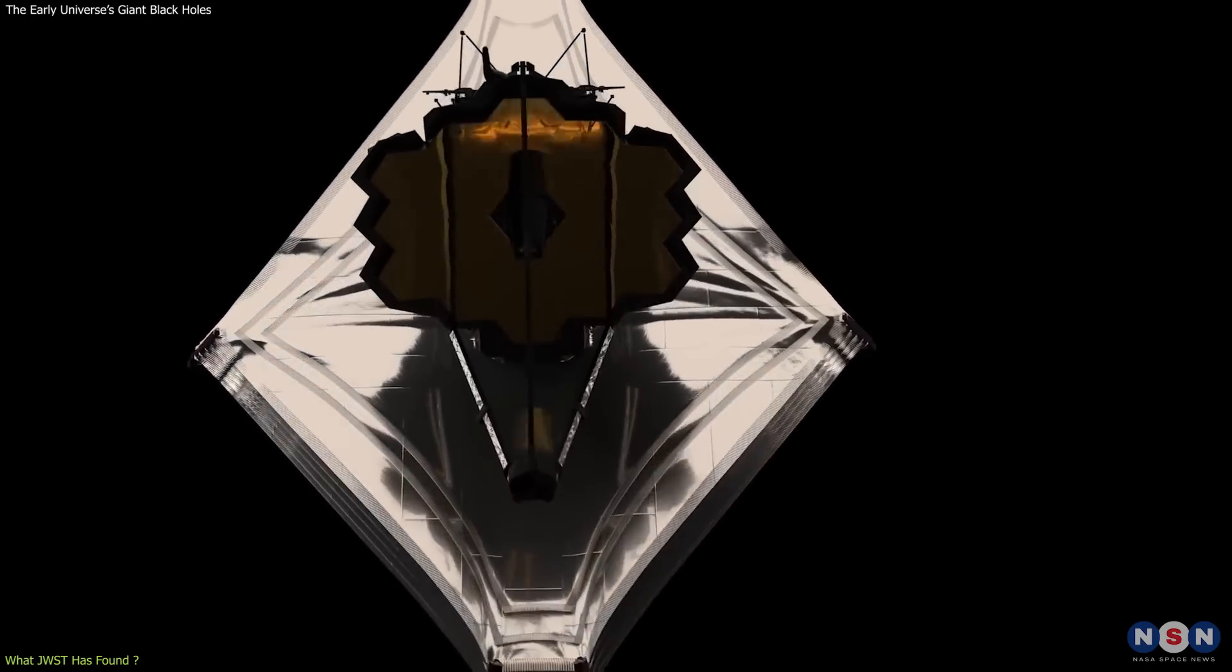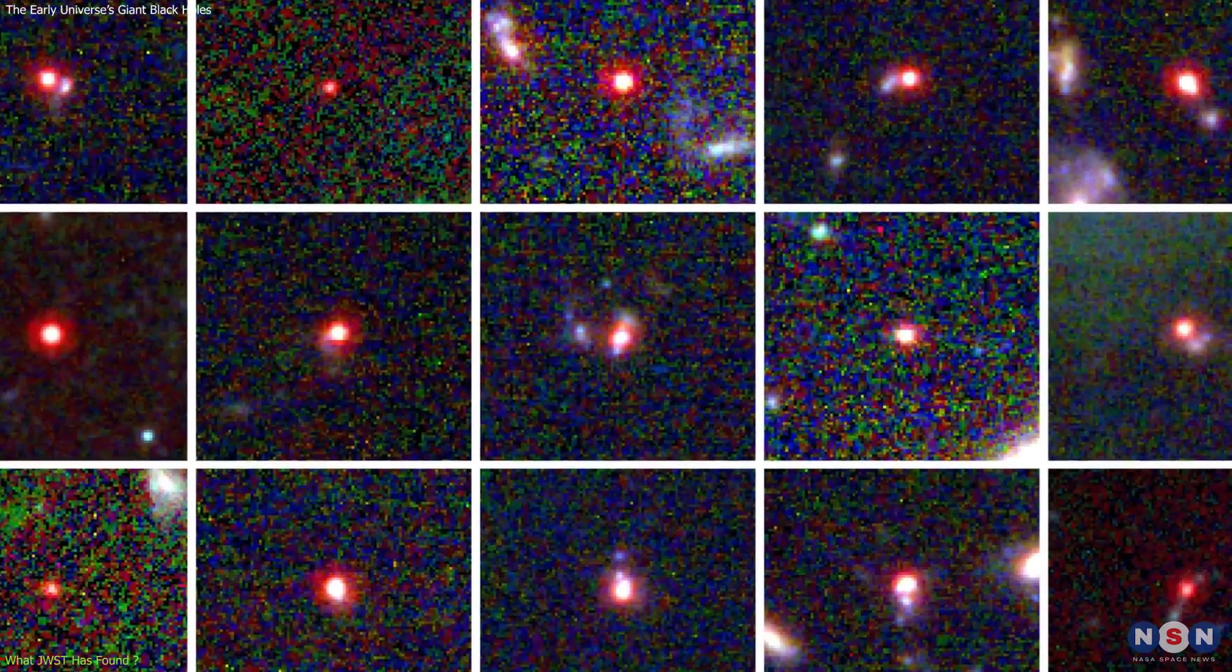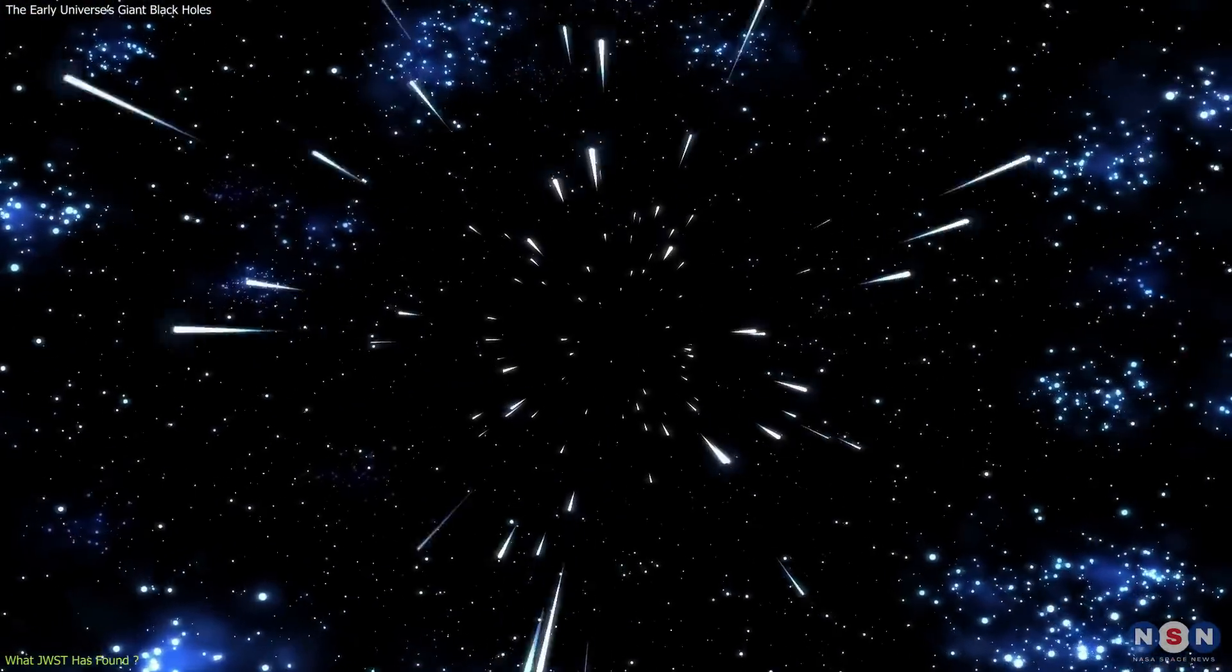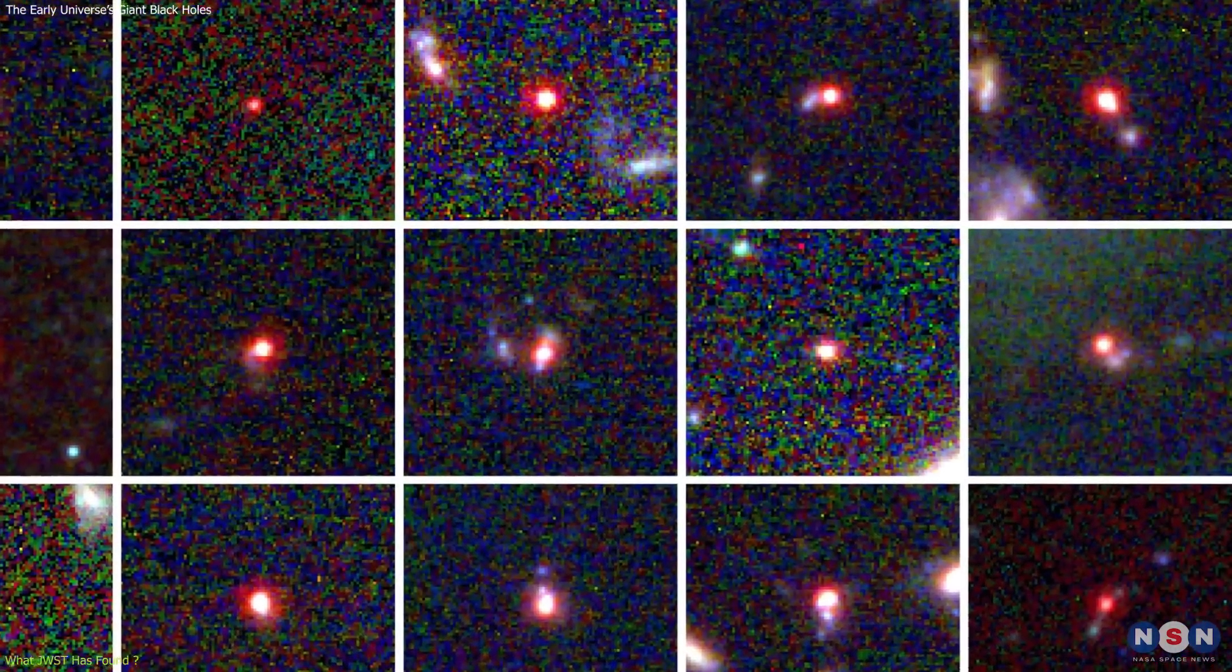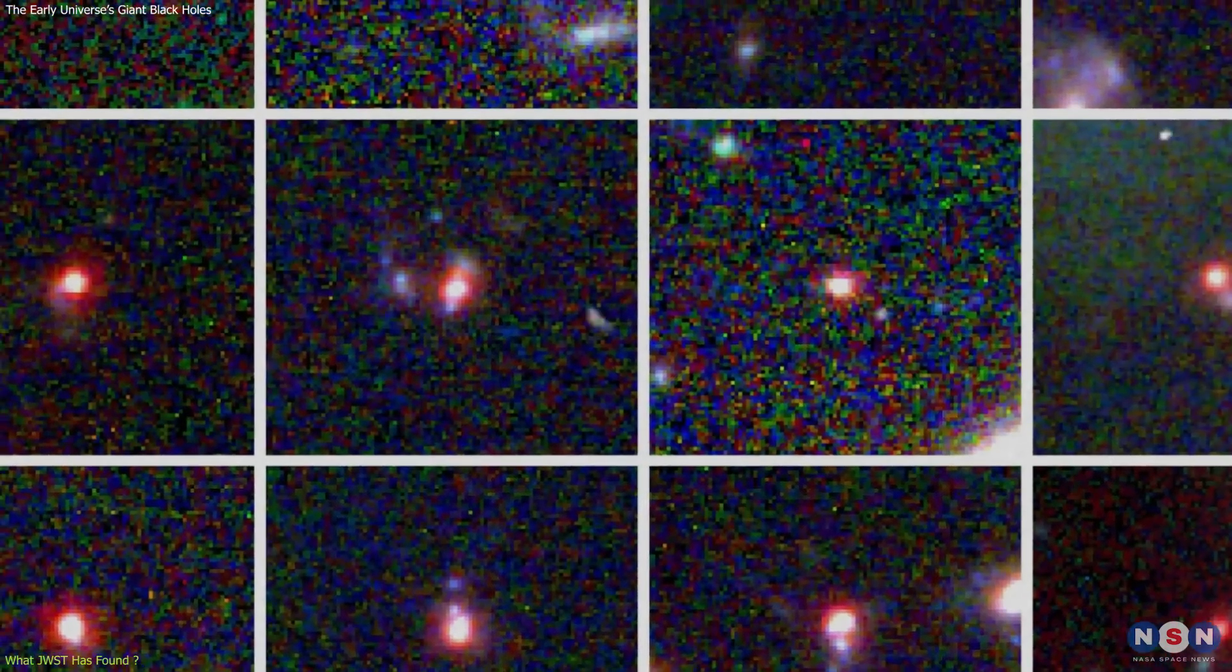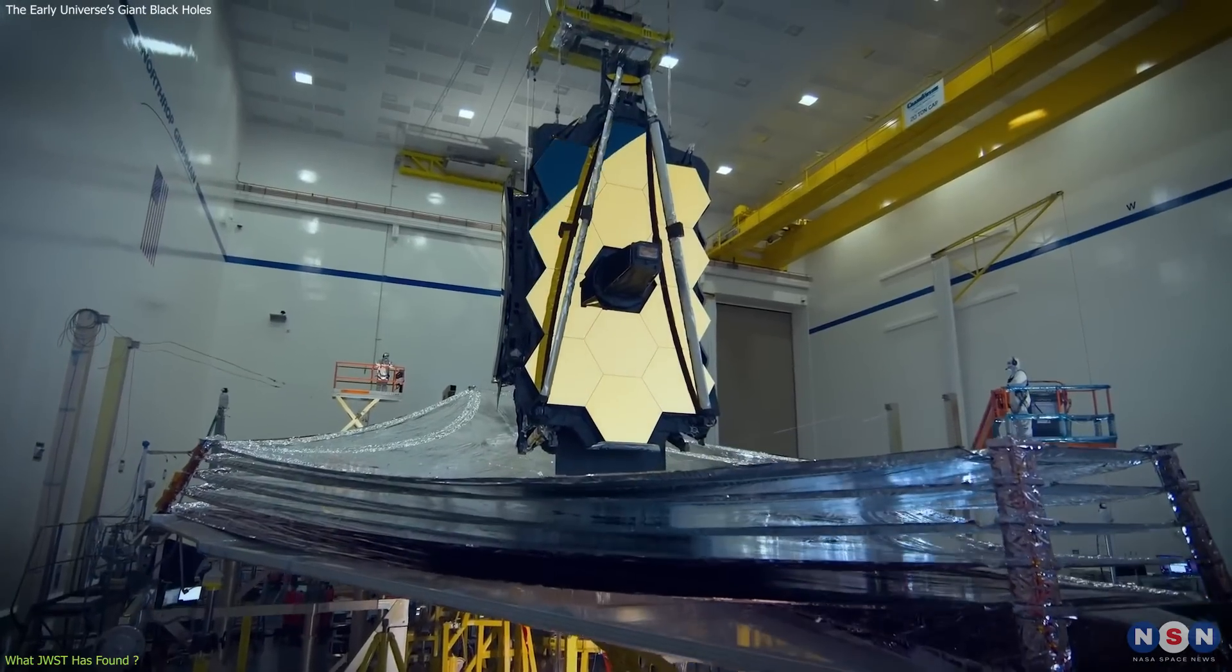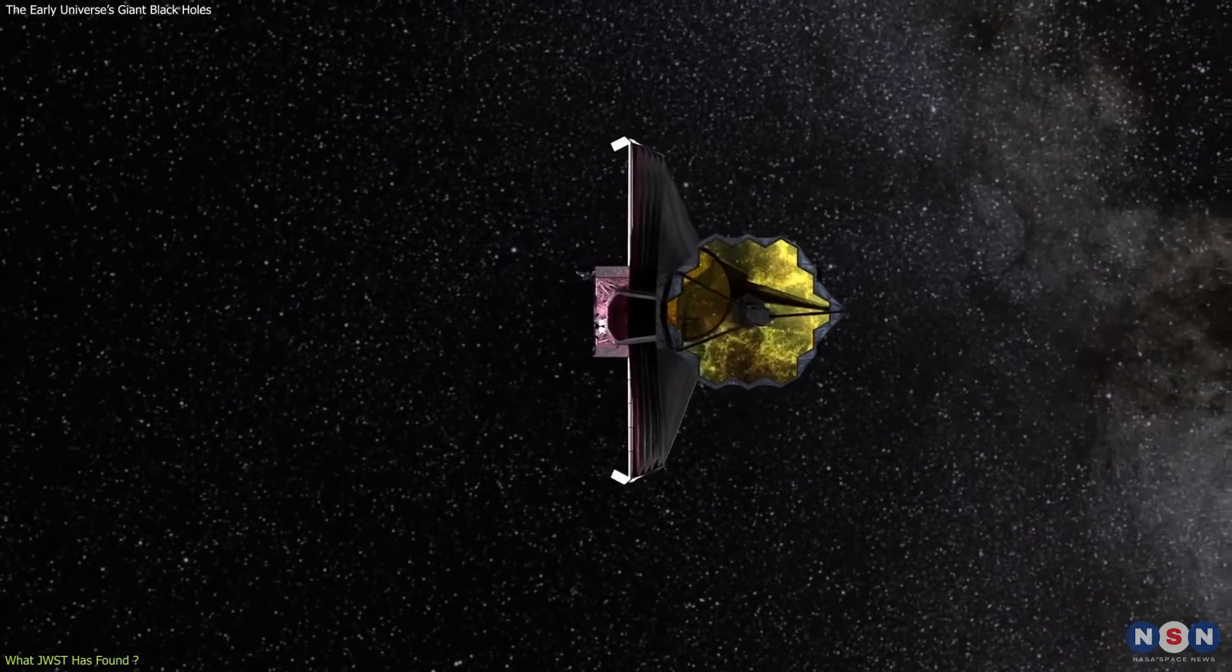By using James Webb's capabilities, it has been able to observe some of the earliest galaxies in the universe, which are about 13 billion light-years away. This means we see them as they were when the universe was less than a billion years old. These galaxies appear as tiny red dots in the sky, but Webb can zoom in and reveal their details. And what James Webb has revealed is surprising and puzzling.